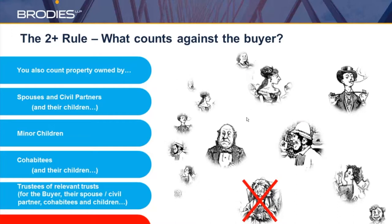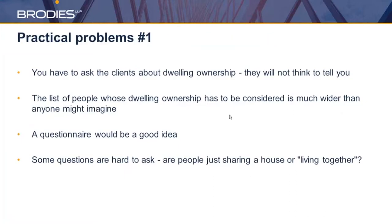This leads to the first big practical problem we can often encounter in assessing whether a client is liable to ADS: the level of detail you need to go into when deciding about dwelling ownership. The list of people whose dwelling ownership is caught is longer than anyone might reasonably imagine. A sensible approach is probably to have some kind of questionnaire that can be provided to clients as part of the take-on process, rather than relying on clients to deliver up this information. There's also some sensitivity around relationships: are people just sharing a house, or are they living together as if they were spouses or civil partners, which would push them into the cohabitees category?